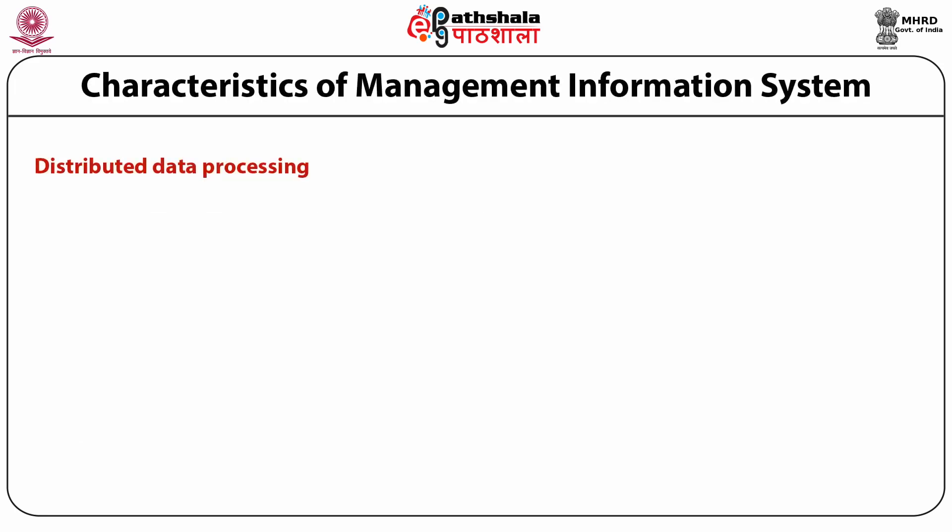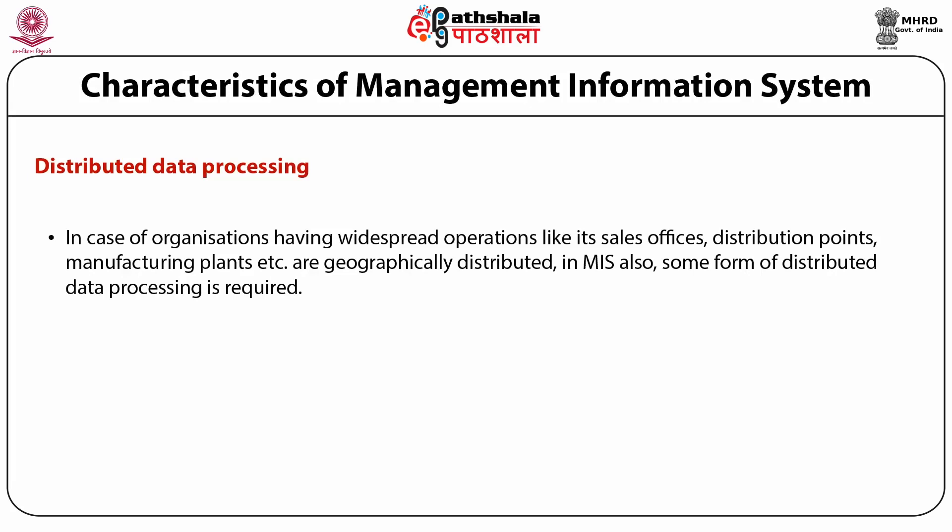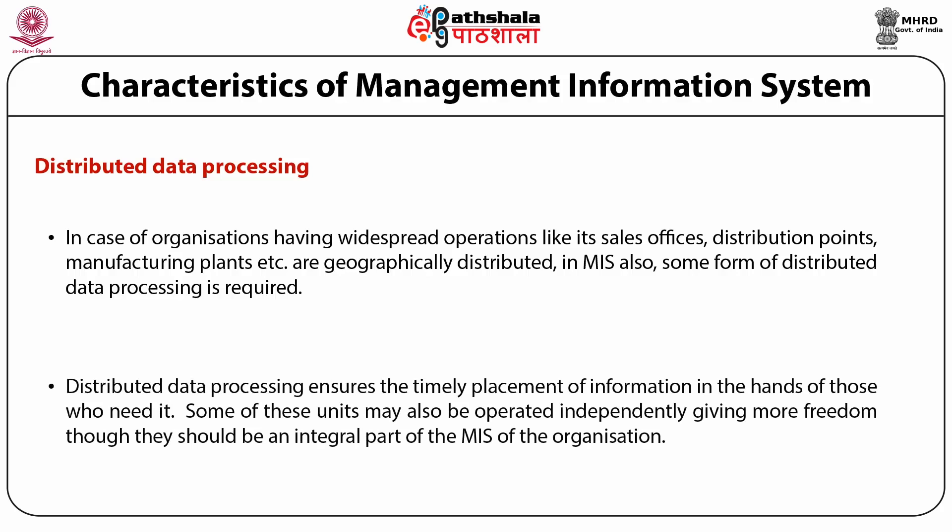Another feature is distributed data processing. In case of organizations having widespread operations — like sales offices, distribution points, manufacturing plants, etc. that are geographically distributed — MIS also requires some form of distributed data processing. Distributed data processing ensures the timely placement of information in the hands of those who need it. Some of these units may also be operated independently, giving more freedom, though they should remain an integral part of the organization's MIS.